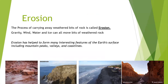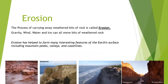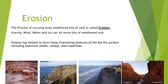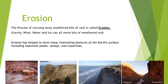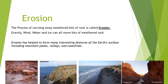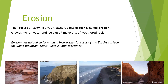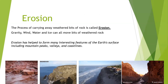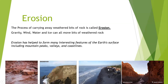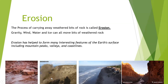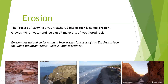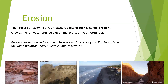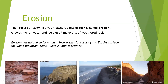The process of carrying away weathered bits of rock is called erosion. Gravity, wind, water, and ice all move bits of weathered rock. Erosion has helped to form many interesting features of the earth's surface, including mountain peaks, valleys, and coastlines. Here we have a valley, and this is erosion at its finest — you can see the dirt moving, that is erosion. Another form of erosion is water carrying particles of rock down a river.